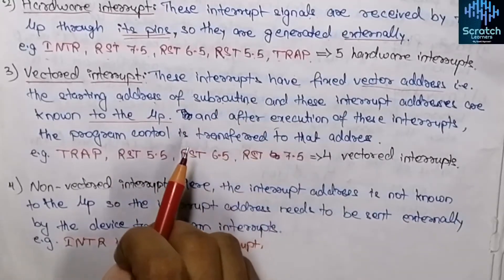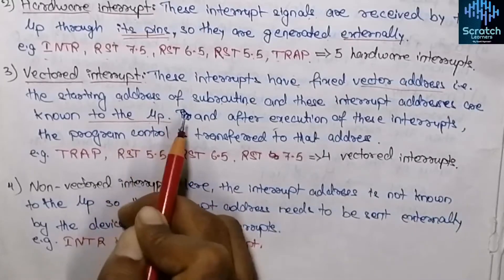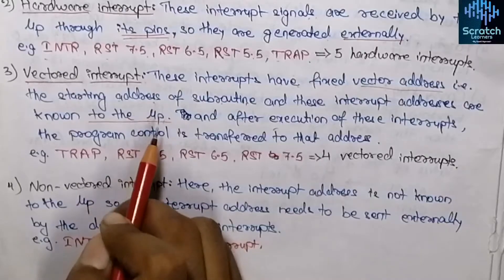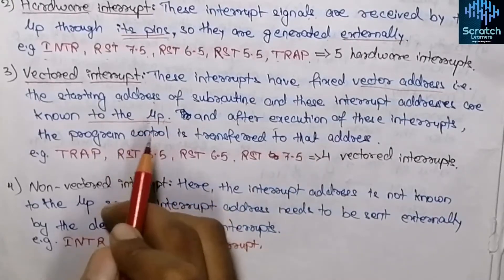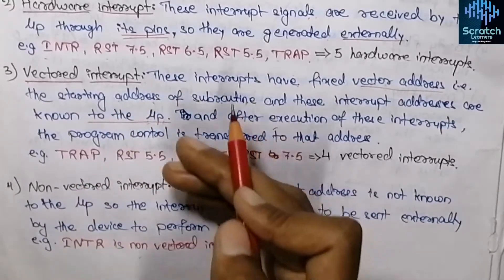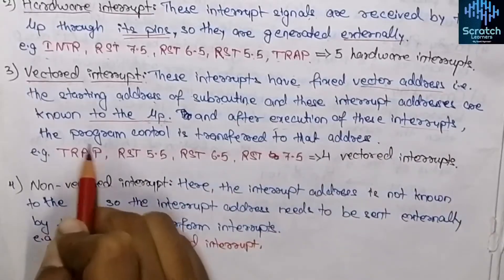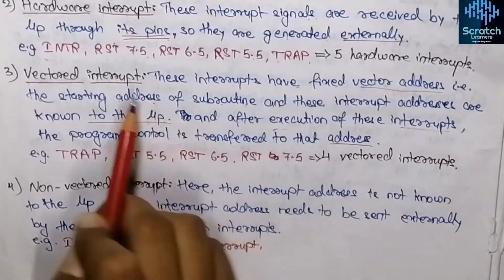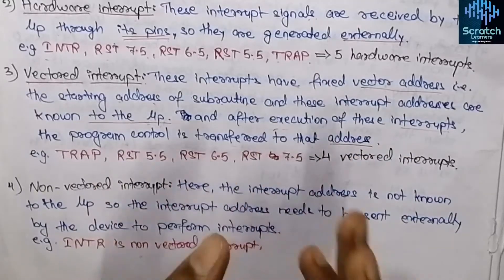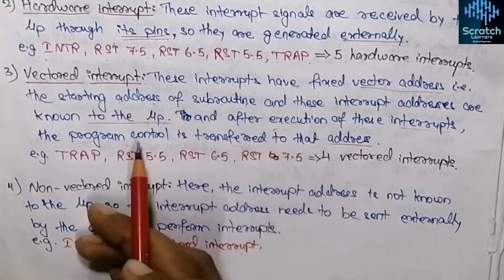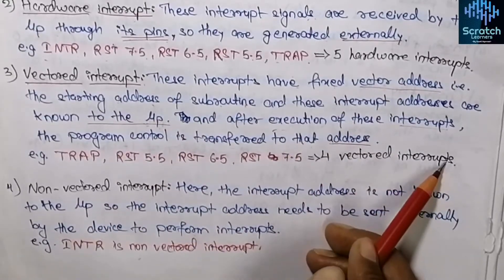How does the microprocessor know the starting address of the subroutine — that is, the vector address? The addresses of the ISR — that means the Interrupt Service Routine — to which the program control will be transferred, are fixed by the manufacturer. So the microprocessor always knows its vector address. After the execution of these interrupts, program control is transferred to that address. There are four vectored interrupts in the 8085: TRAP, RST 7.5, RST 6.5, and RST 5.5.